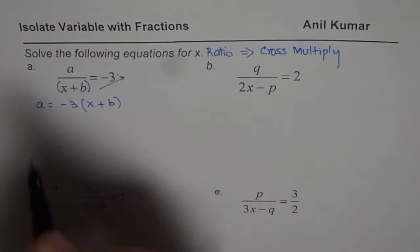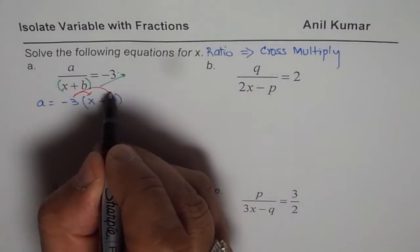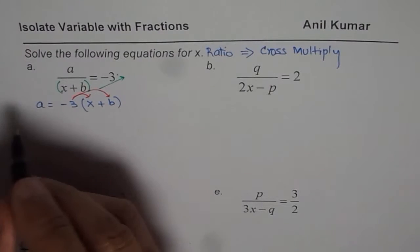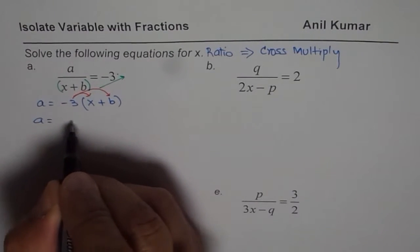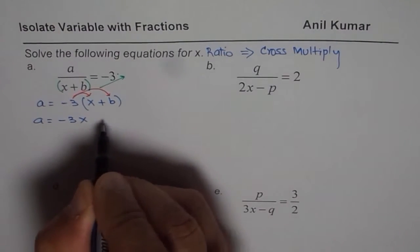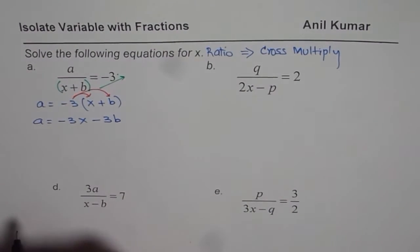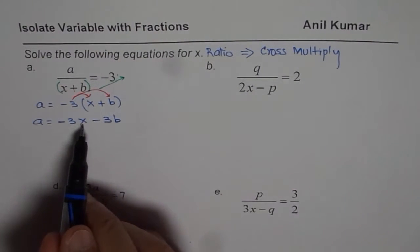Now second step is apply the distributive property. So once you apply the distributive property, you get a equals minus 3x minus 3b. Now we need to isolate x.